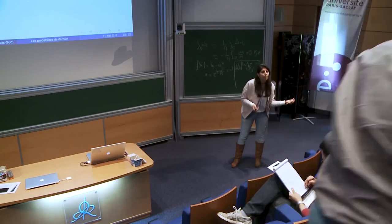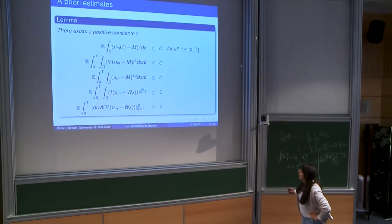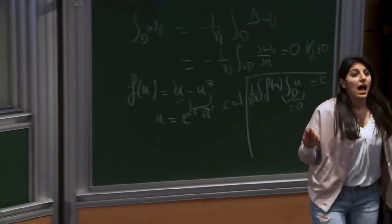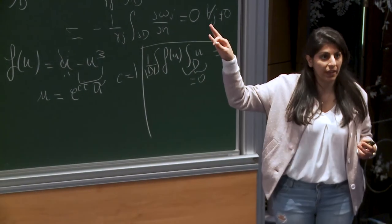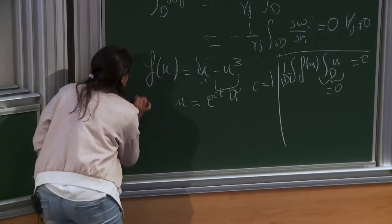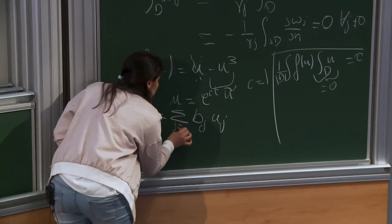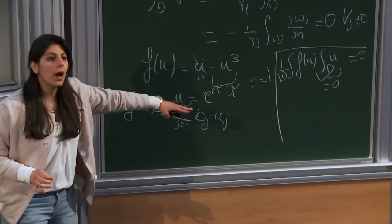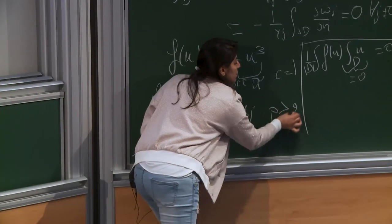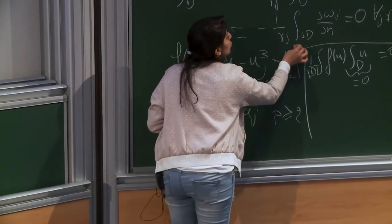Question: What is the parameter p, the power p that appeared? Answer: In the case of Allen-Kahn, f(u) = u minus u^3. In our case, we extended this to a more general polynomial: u equals a sum of coefficients g from 1 to 2p minus 1, so it is a more general polynomial with p bigger than 2. We did not consider only u minus u^3 but polynomials up to degree 2p minus 1.